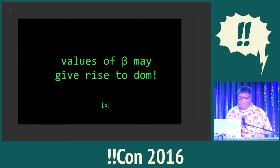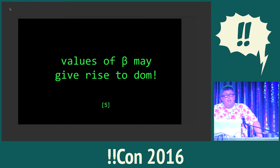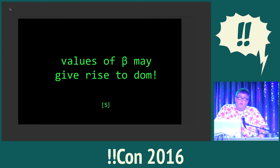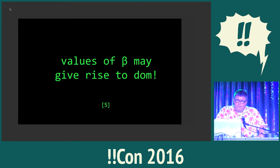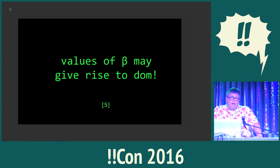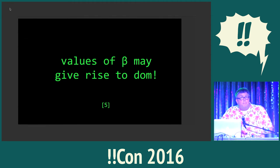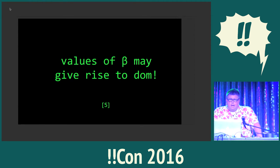Now we finally get to "values of beta may give rise to DOM." Where does this come from? The story is that one day Ken Thompson came into the lab and there was all this weird stuff on the photo typesetter, and one of the things printed out was this phrase: "values of beta may give rise to DOM." I say beta instead of beta because I'm not British. The interesting story is that they worked with another person named Doug McElroy, who is responsible for putting the pipe into Unix — so if you've ever used pipes, that's where that came from. He was experimenting with computer voice synthesis.